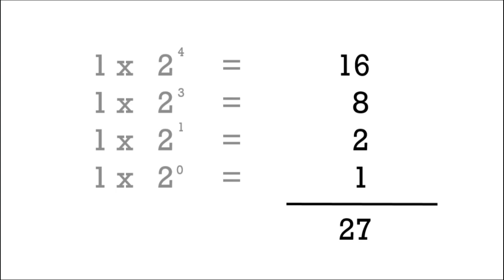So we add it all together and we get the number 27. So that just means that 1 1 0 1 1 is another way of expressing the number 27.